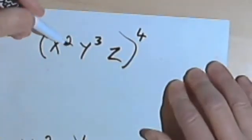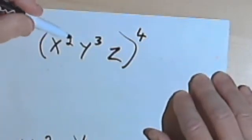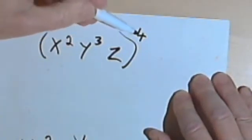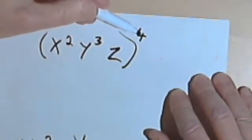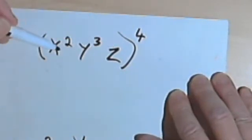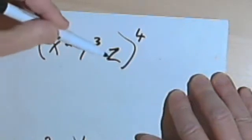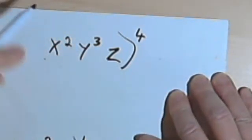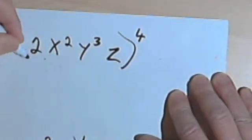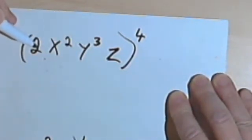So here I've got x squared y to the third z raised to the fourth, and the point is this: this fourth power outside the parenthesis applies to every one of the variables that I have inside here. If there was a number, actually let's make this 2, x squared y to the third z, it would apply to the 2 also.